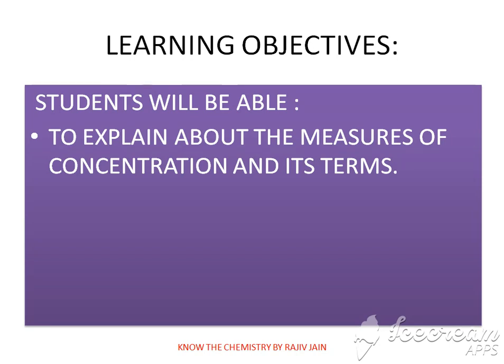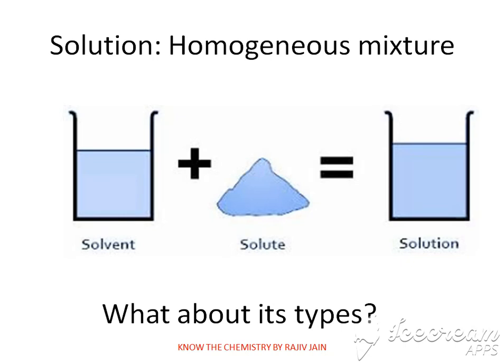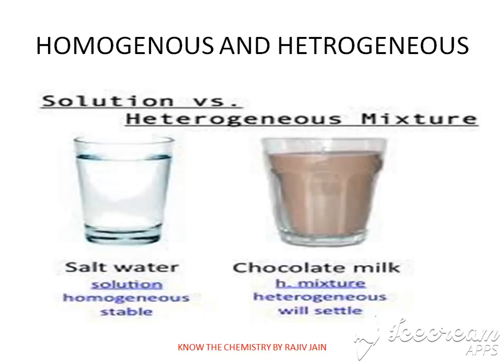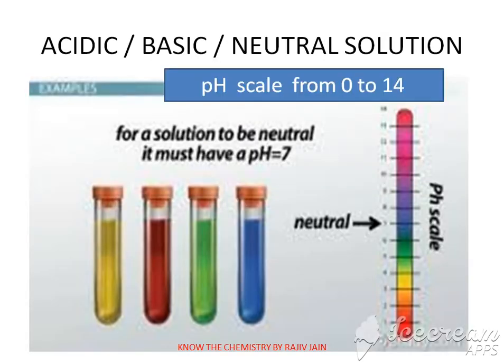Learning objectives: students will be able to learn about the measures of concentration. What is a solution? A solution is a combination of solute and solvent, and it is a homogeneous one — that is the key word to keep in mind. Solutions can be homogeneous, where the composition is constant throughout, or heterogeneous if it is not.